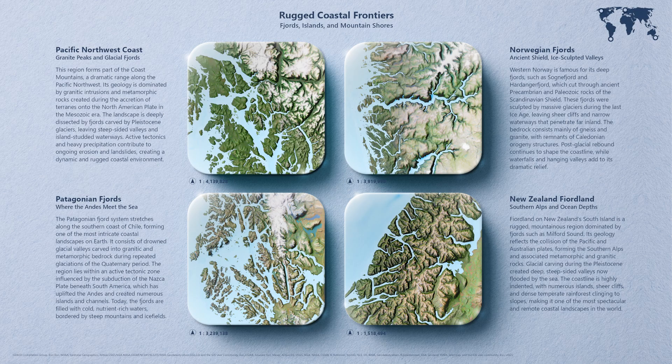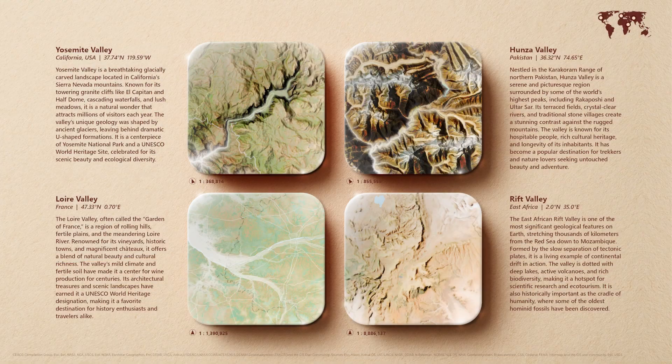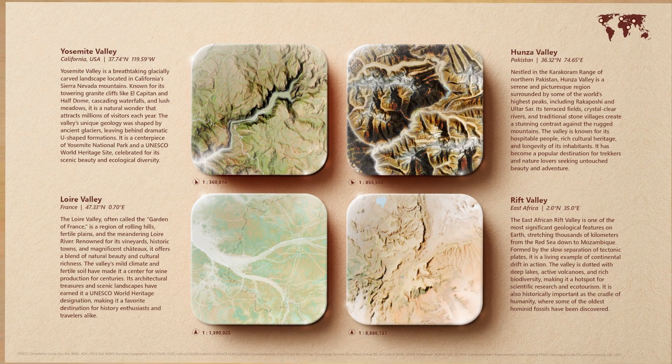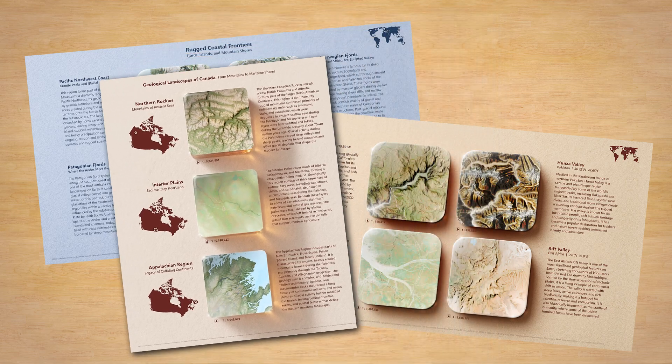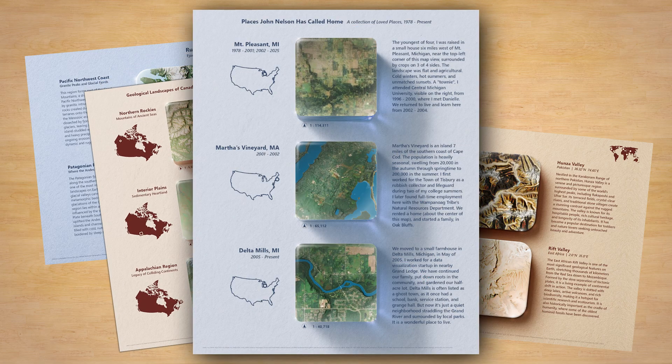Here's an example that shows four cool-looking fjord lands around the world. Here are four interesting valleys. This Instagram-sized one talks about the geology of Canada — I modified the overview map, and you could do that too. Here's a more personal one that describes the various places that I've lived. Follow the link in the description, download this ArcGIS Pro project package, and start making your own little EarthBlock posters.